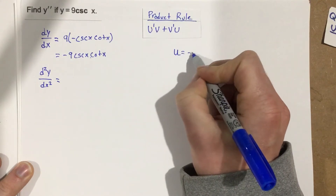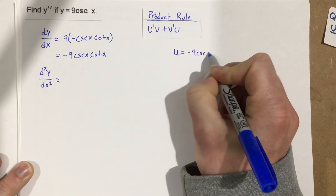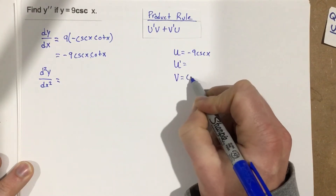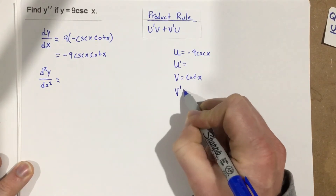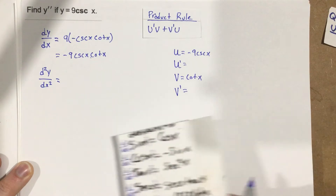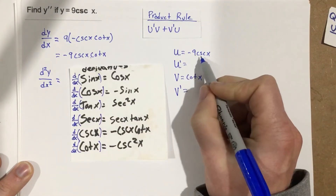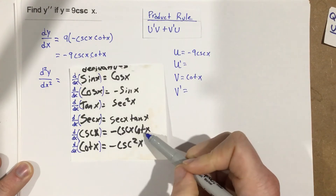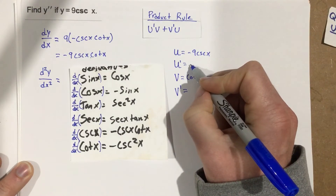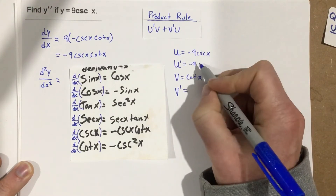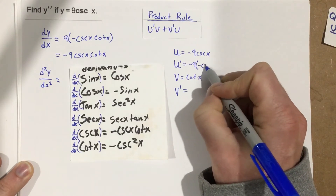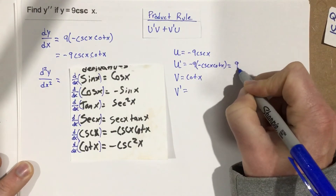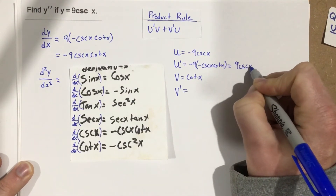So u equals negative 9 cosecant x. I need to find u prime. v we know is cotangent x, and I need to find v prime. The derivative of negative 9 cosecant x: the derivative of cosecant is negative cosecant x cotangent x, so this is negative 9 times negative cosecant x cotangent x. When I simplify that, that's just 9 cosecant x cotangent x.